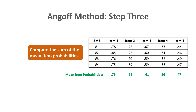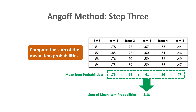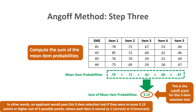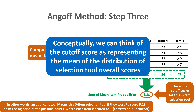For step three of the Enghoff method, we compute the sum of the mean item probabilities from step two — simply adding them up — giving us a sum of 3.13. This is our cutoff score for this five-item selection tool. An applicant passes if they score 3.13 or higher out of five possible points, where each item is scored as 1 for correct or 0 for incorrect. Conceptually, the cutoff score represents the mean of the distribution of selection tool overall scores.